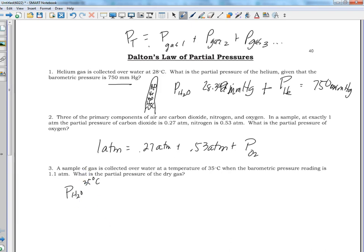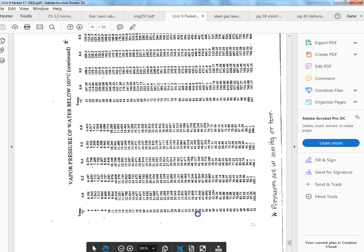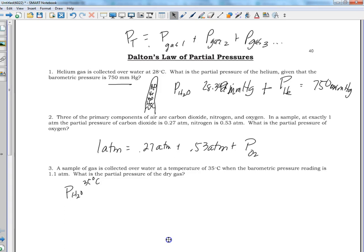So we go back to our chart, 35 degrees. The pressure is going to be 41.175 millimeters of mercury.